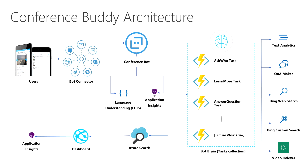The bot actually talks to something called a bot brain. The bot brain is a concept we abstracted out from the bot — it's actually a set of tasks we call bot tasks, deployed into Azure Functions, where each task accomplishes a single thing. For example, if someone at the conference asks who the speaker is, they go to the 'ask who' task. If someone wants to learn more about the topic, they go to the 'learn more' task. And if they want to ask a question, they use the 'answer question' task.